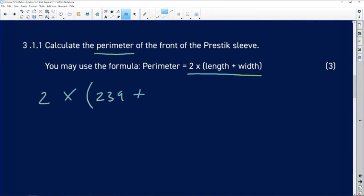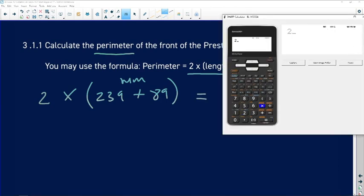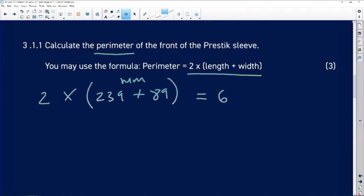And then we know that the breadth or the width, because remember, breadth and width is exactly the same thing, is 89. This is all in millimeters. Meaning your answer also needs to be in millimeters. So that's two times 239 plus 89. That's 656 millimeters. Perimeter is millimeters. So 656 millimeters.